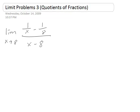Now let's take a look at this problem, which is the limit of 1 over x minus 1 over 8, all over x minus 8, as x approaches 8. If you plug in x equals 8, you get 0 over 0, an indeterminate form.